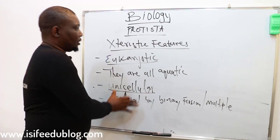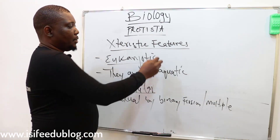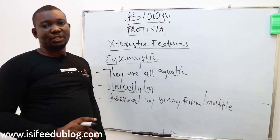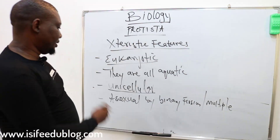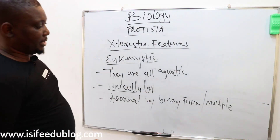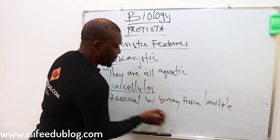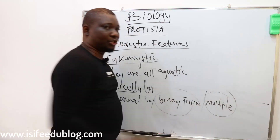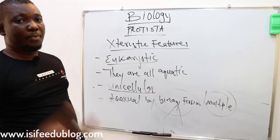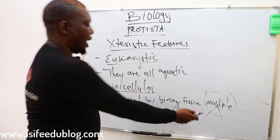These are the basic features of the kingdom Protista: they are eukaryotic, all members are aquatic, all members are unicellular simple organisms, but their reproduction is basically asexual. Some few members reproduce sexually. In binary fission, only two daughter cells are formed from the parent cell. In multiple fission, two or more daughter cells are produced.